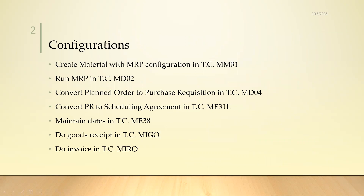First I am going to create a material with MRP configuration in MM01 transaction. Then I am going to run MRP in MD0 and material requirement planning in MD02. Then I am going to convert planned order to purchase requisition in MD04, convert purchase requisition to scheduling agreement in ME31L, maintain dates in ME38, do goods receipt in MIGO, and invoice in MIRO.